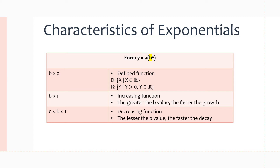If it was 2 to the power of x versus 3 to the power of x, 3 to the power of x is going to grow faster than 2 to the power of x. If the b value is between 0 and 1 — so if it was something like one half — it's a decreasing function, but the lesser the b value, the faster the decay.